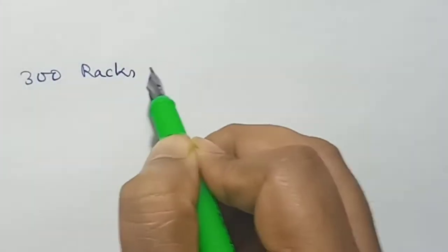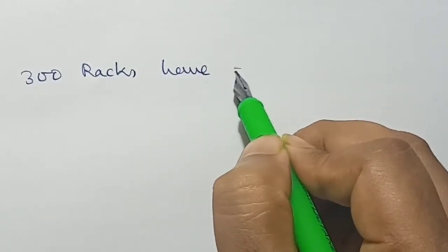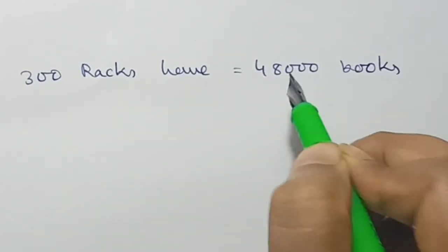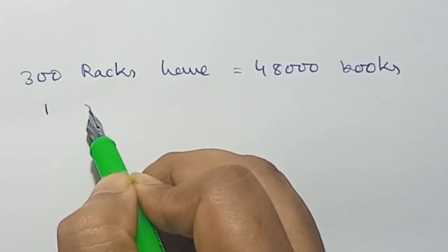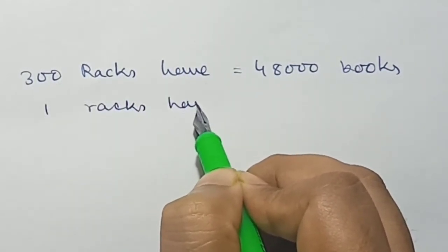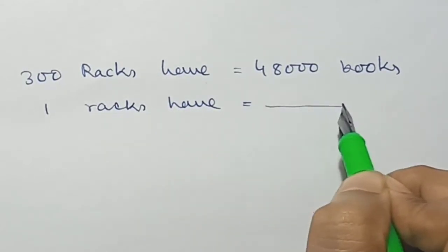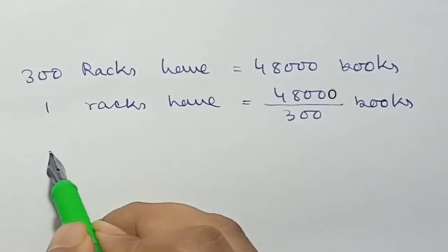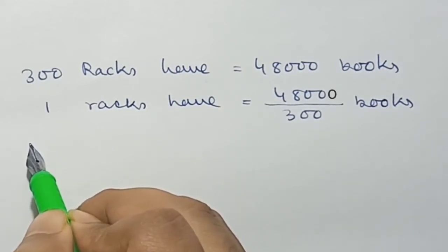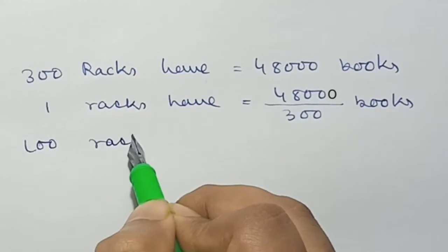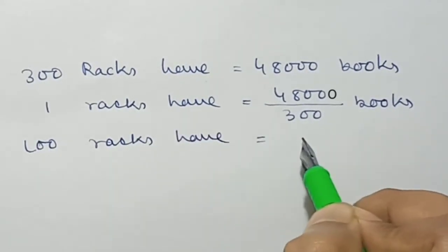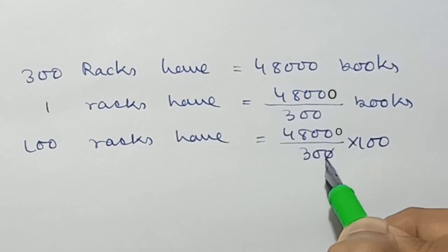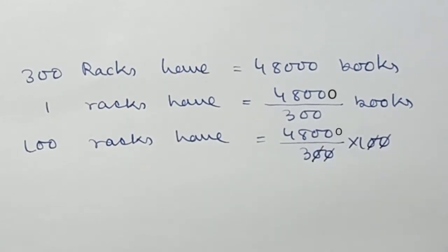300 racks have 48,000 books. Therefore, 1 rack has 48,000 divided by 300 books. Next, 100 racks have 48,000 divided by 300, multiplied by 100. The zeros cancel — this zero and this zero cancel.